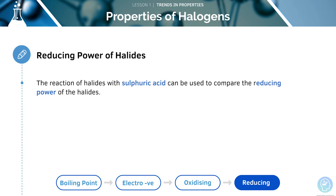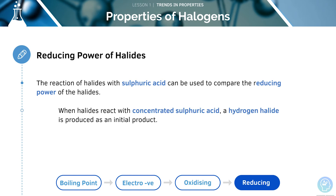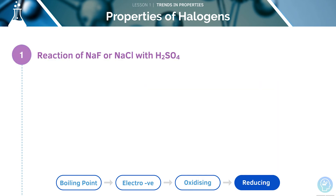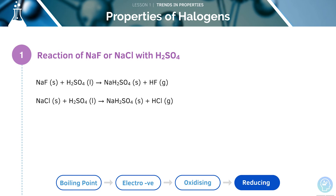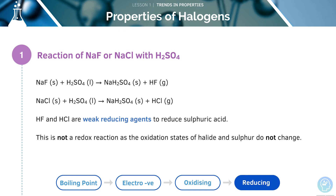We can use the reaction of halides with sulfuric acid to compare their reducing power. When halides react with concentrated sulfuric acid, a hydrogen halide is produced as an initial product. Other products can also be produced depending on the halide. Hydrogen fluoride or hydrogen chloride gas is formed, observed as misty fumes when the gas contacts moisture in the air. The reaction does not proceed further, as hydrogen fluoride and hydrogen chloride are only very weak reducing agents and are not strong enough to reduce sulfuric acid. It's important to remember that this is not a redox reaction, as the oxidation states of the halide and sulfur do not change.